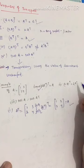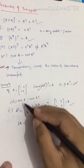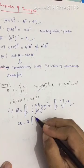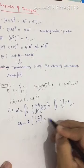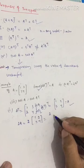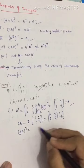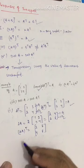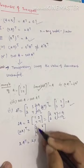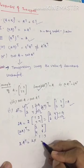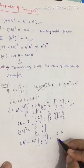Second proof: (2A)-transpose = 2 · A-transpose. Multiply 2 into all entries of A = [1, 2; 3, 4] to get 2A = [2, 4; 6, 8]. Take its transpose by changing rows into columns: (2A)-transpose = [2, 6; 4, 8]. Now 2 · A-transpose: A-transpose = [1, 3; 2, 4], multiplied by 2 gives [2, 6; 4, 8]. So (2A)-transpose = 2 · A-transpose is proved.